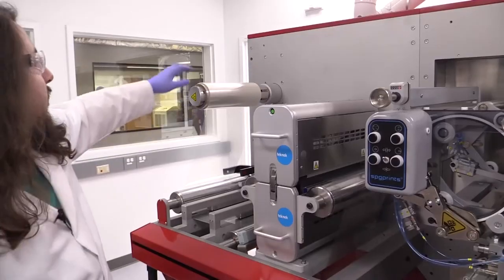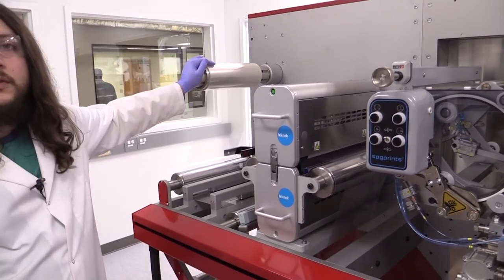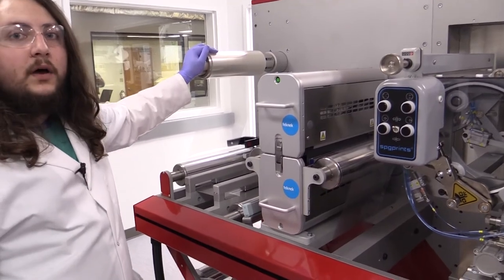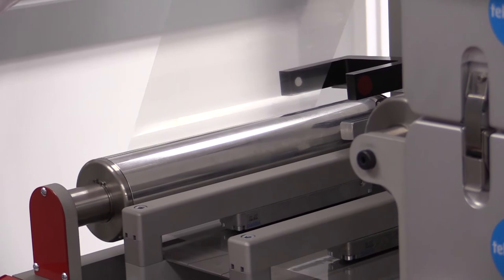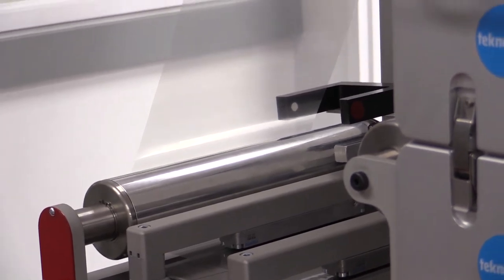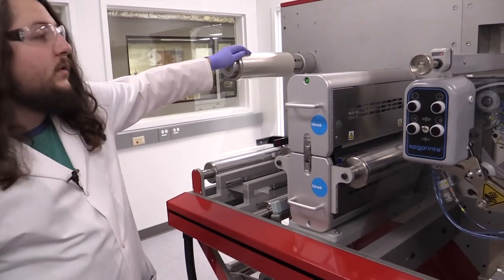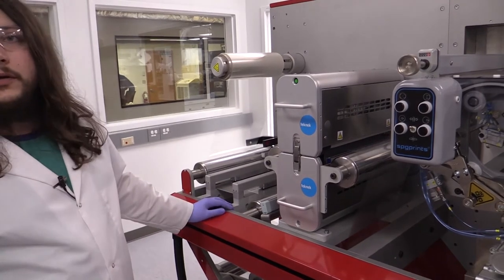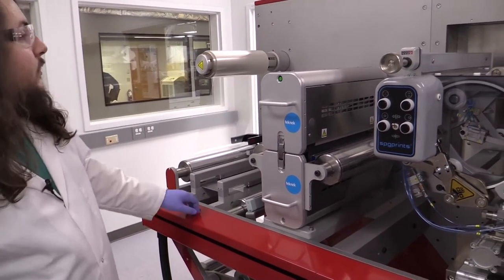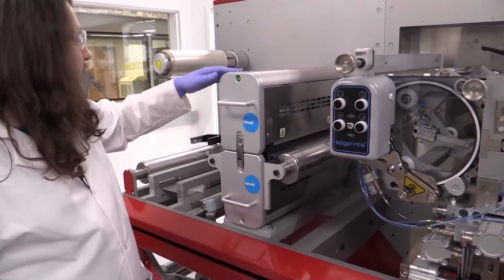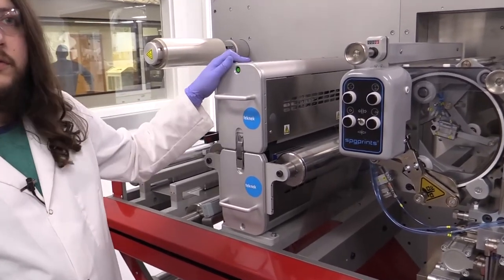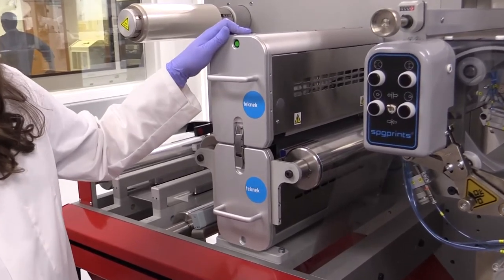We start with an initial PET roll. This can be treated with either a transparent conductive oxide or be run as just plain substrate depending on your application. The first step that we have to go through is rolling it and cleaning it to prepare the substrate for printing. The first step is a static cleaner. We are discharging any static electricity and then using a rubber roller to pull off any particulates.